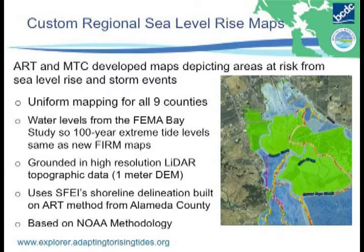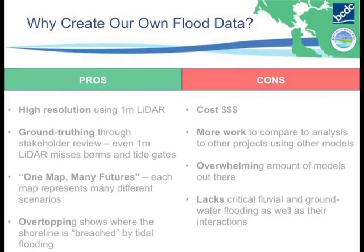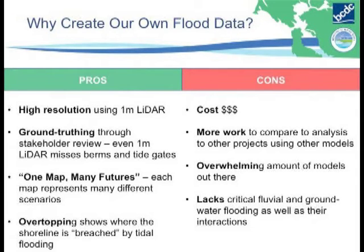In order to do that, we created our custom regional sea level rise maps. We did this for several reasons: high resolution; we had ground truthing and engaged stakeholders to identify where the model over- or under-predicts flooding — accounting for tide gates that could be missed even at high resolution. We used a 'one map many futures' approach that lets you represent flooding across multiple different time horizons at once, and overtopping — showing where the weak points along the shoreline are, where water is actually coming from, so that we can solve those problems.